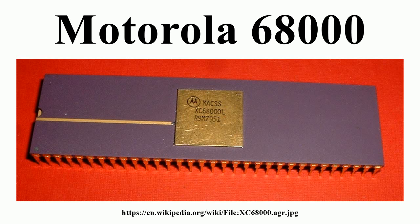Several other companies were second-source manufacturers of the HMOS 68000. These included Hitachi, who shrank the feature size to 2.7 micrometers for their 12.5 MHz version, Mostek, Rockwell, Signetics, Thomson, SGS-Thomson, and Toshiba. Toshiba was also a second-source maker of the CMOS 68HC-000. Encrypted variants of the 68000 — the Hitachi FD1089 and FD1094 — stored encryption keys for opcodes and opcode data in battery-backed memory, and were used in certain Sega arcade systems including System 16 to prevent piracy and illegal bootleg games.